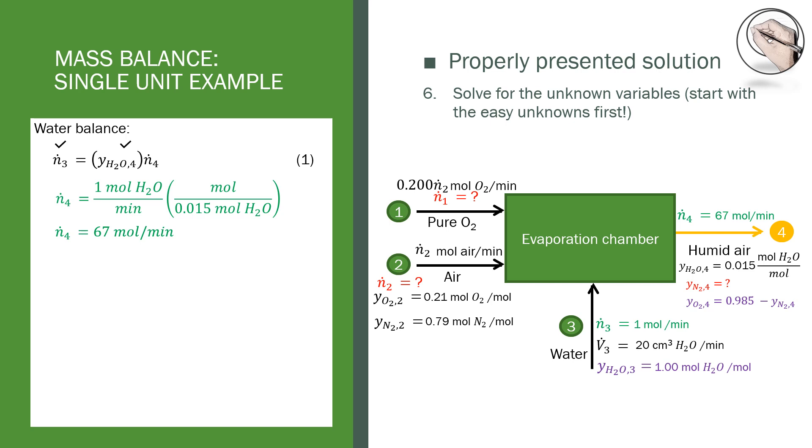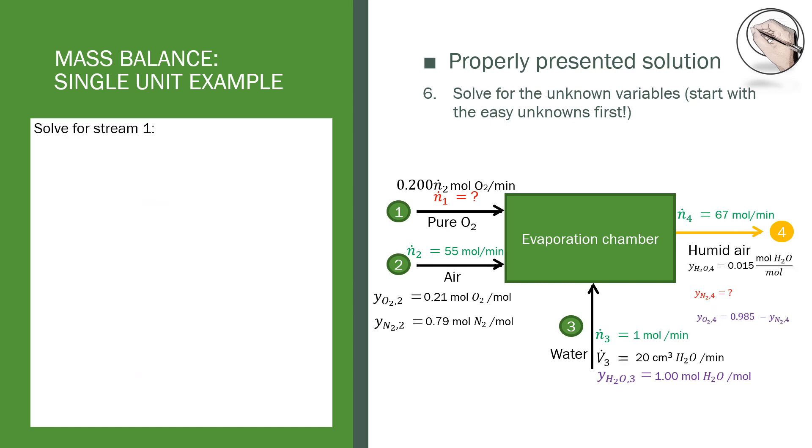Next up we can do an overall balance because we get to use the extra information and the fact that we know streams 3 and 4 to solve for stream 2. Using the extra information we can solve for stream 1 with the calculated stream 2 value.